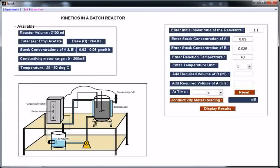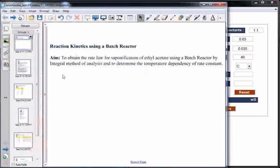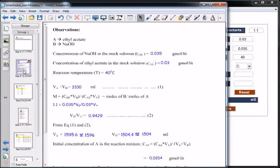I will show you the calculation part. Concentration of NaOH in the stock is 0.035. Concentration of ethyl acetate in the stock is 0.03. Va plus Vb, that is total volume of the reactor is 3100. From these two equations, one can calculate Va and Vb.